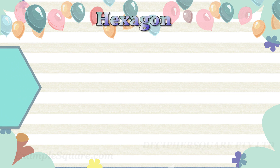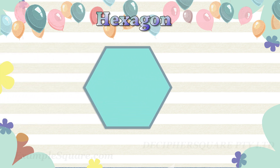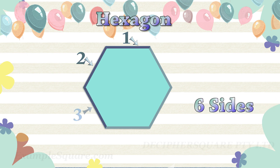A hexagon shape is a shape with six sides and six corners. This is a hexagon. It has six sides: 1, 2, 3, 4, 5, 6.